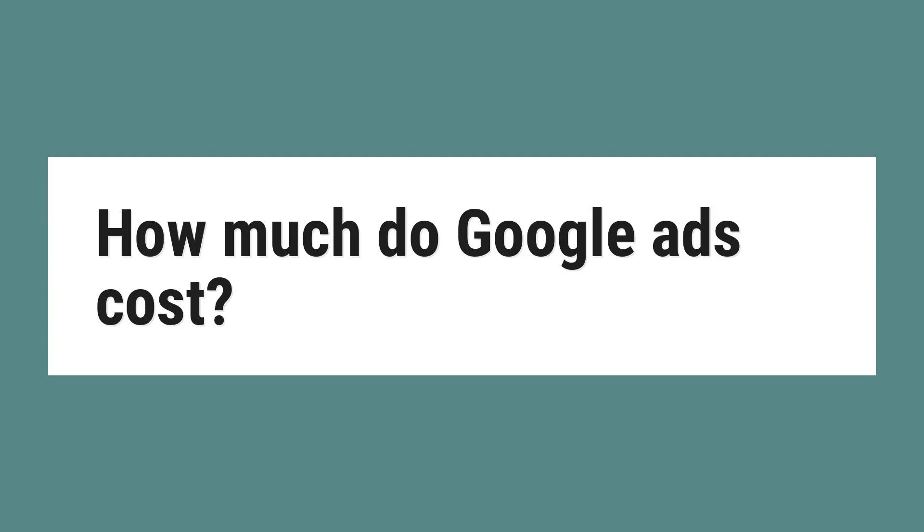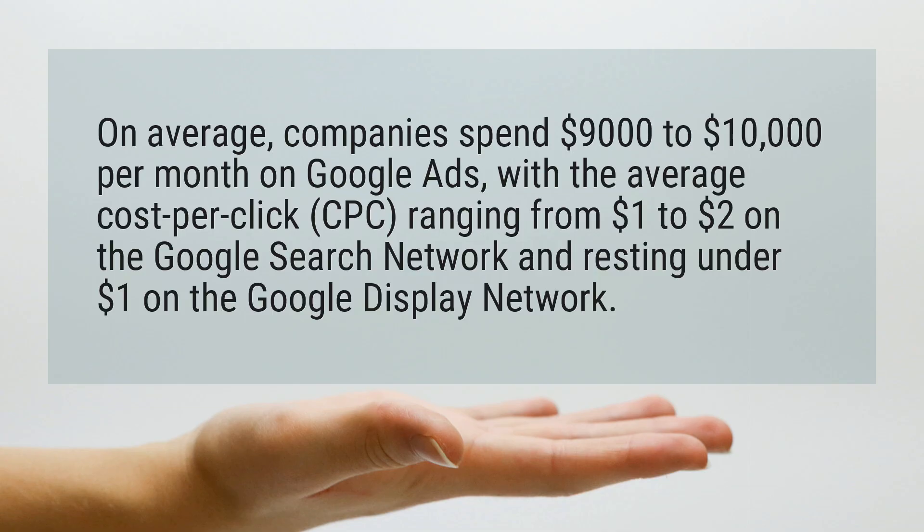How much do Google Ads cost? On average, companies spend $9,000 to $10,000 per month on Google Ads, with the average cost per click ranging from $1 to $2 on the Google search network and resting under $1 on the Google display network.